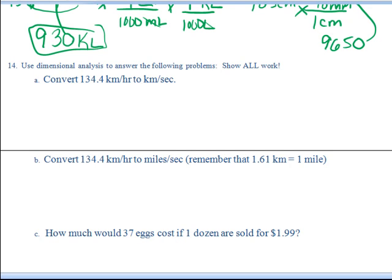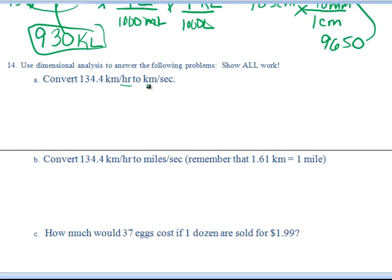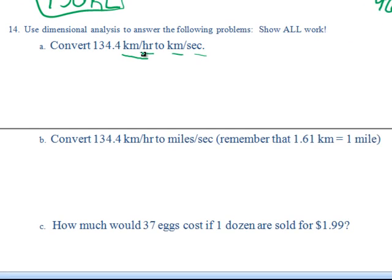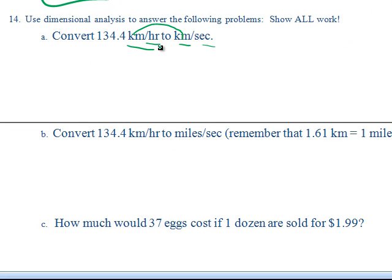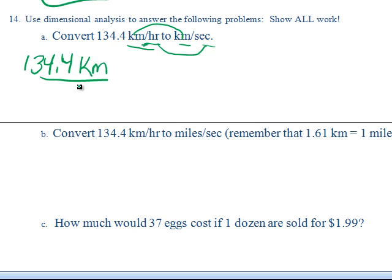Now let's start on question 14 and do a dimensional analysis problem. It says convert 134.4 kilometers per hour to kilometers per second. Kilometers stays the same, so we don't need to change that, but we do need to change hours to seconds. Whenever you see a slash, always write it as a straight line. Start with 134.4 — always start with the number given to you in the problem — kilometers per hour.